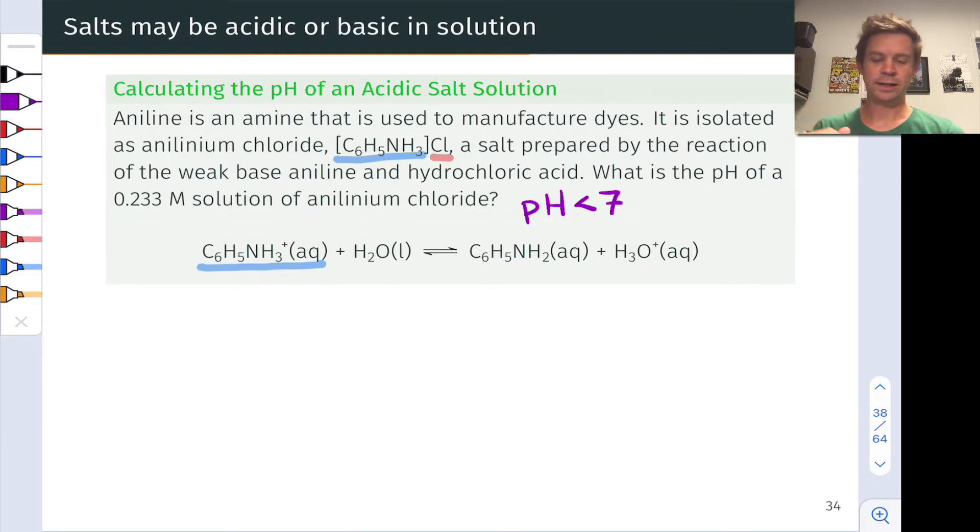The next thing we need is Ka for the anilinium cation, and this could be found a couple of different ways. For example, if we only had KB for the conjugate base, anilin, we could calculate Ka as KW divided by KB for anilin.